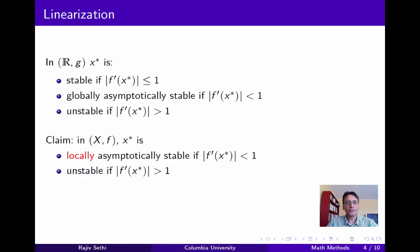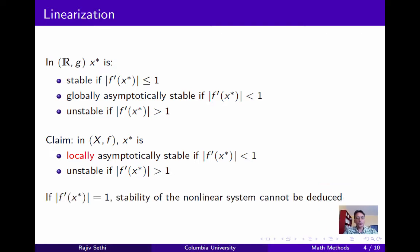Now I'm going to prove in a moment the claim that in the original non-linear system, the fixed point x-star is locally asymptotically stable if the slope of the function f at x-star is strictly less than 1, it's unstable if the slope is greater than 1, and if the slope is exactly equal to 1, the stability of the non-linear system can't be deduced from the properties of the linear system.